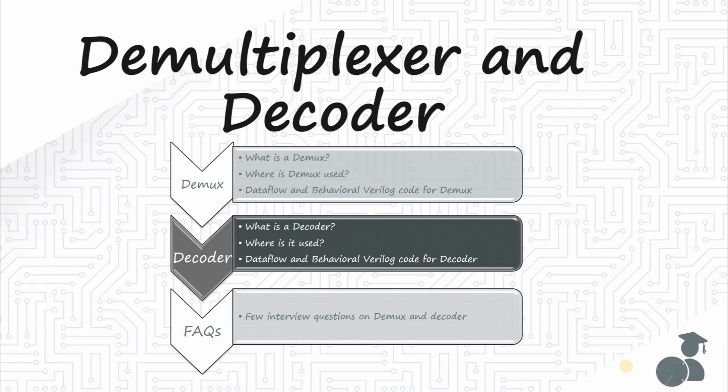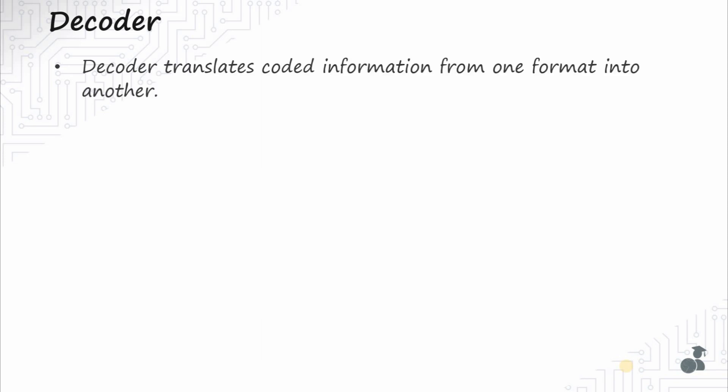Welcome back. In this video, let's understand decoder. As the name implies, a decoder takes an input codeword and changes it into a set of signals. It translates coded information from one format into another.